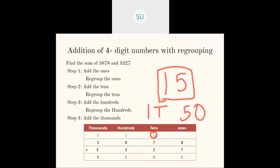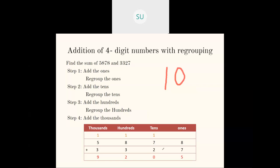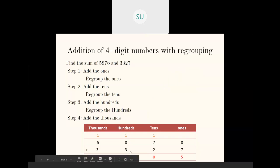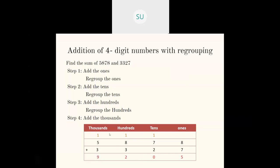Then 7 plus 2 is 9 and 9 plus the carried-over 1 is 10. But 10 in the 10's place means 100. So we write 0 in the 10's place and carry over 1 to the 100's place. Then 8 plus 3 is 11 and 11 plus 1 is 12. We write 2 and carry over 1 to the 1000's place. In the 1000's place: 5 plus 3 is 8 and 8 plus 1 is 9. So the answer is 9,205.